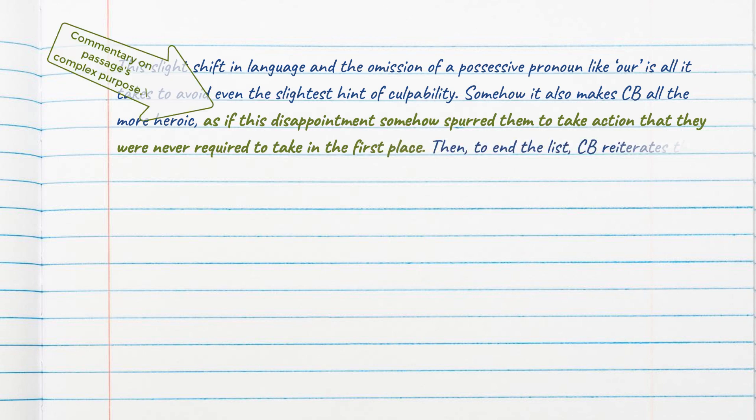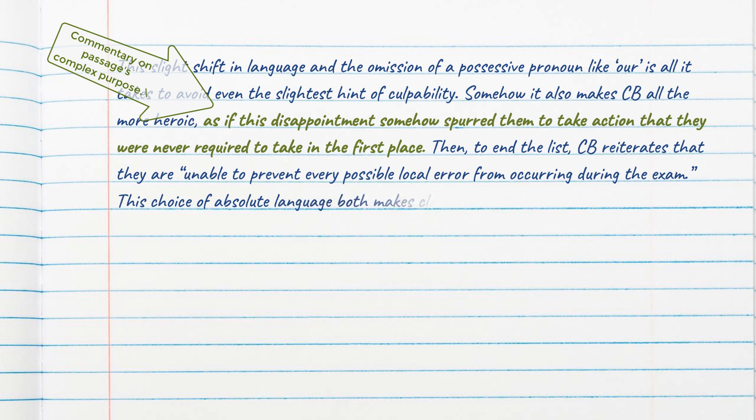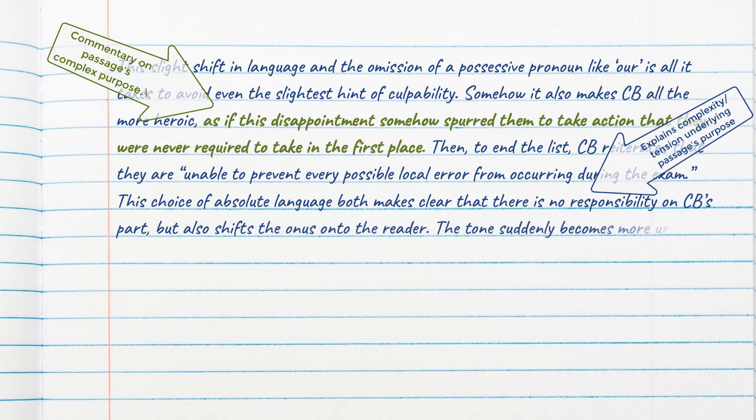Then, to end the list, CB reiterates that they are unable to prevent every possible local error from occurring during the exam. This choice of absolute language both makes clear that there is no responsibility on CB's part, but also shifts the onus onto the reader. The tone suddenly becomes more urgent. The firm wording directs the reader to pay more attention to this important content.